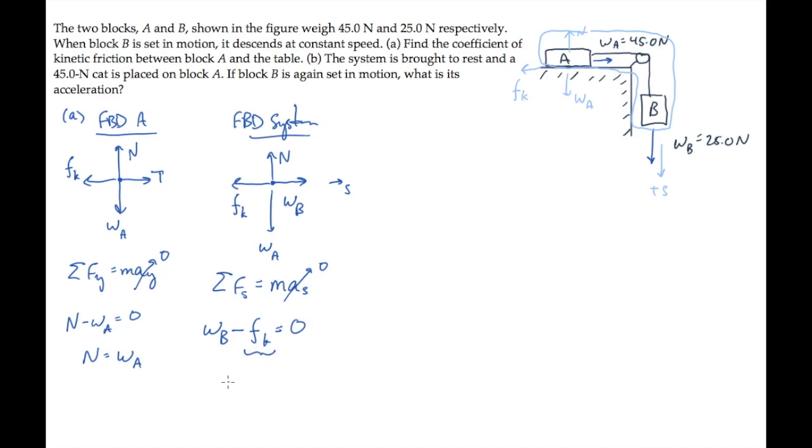The kinetic friction force equals mu sub k times n, so now we can solve for the coefficient of kinetic friction, mu sub k, finding that it equals the ratio of the weight of B to the normal force n. The normal force equals the weight of A, so substituting the numbers gives us mu sub k, the coefficient of kinetic friction equals 0.556.